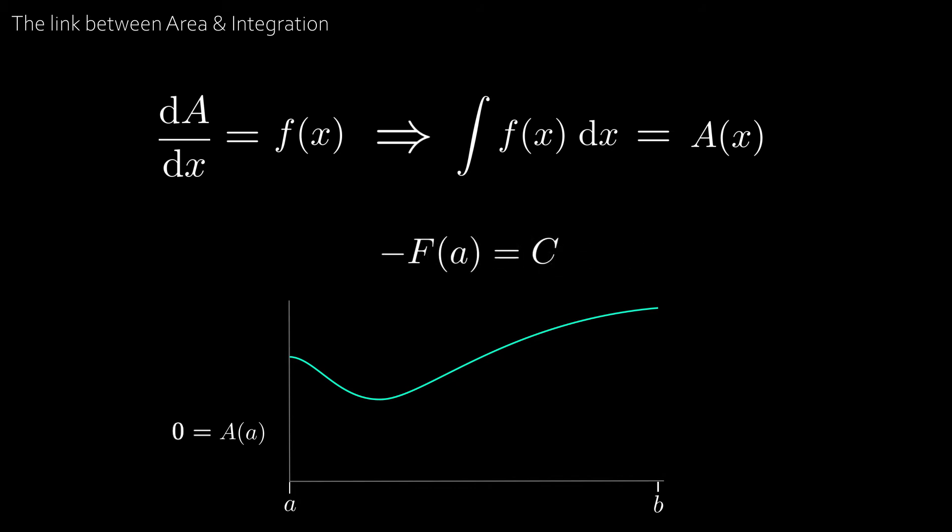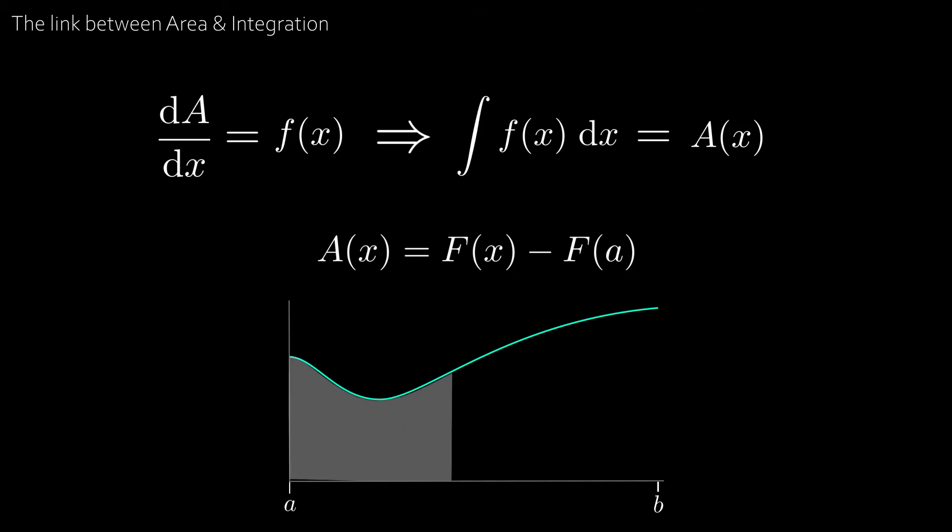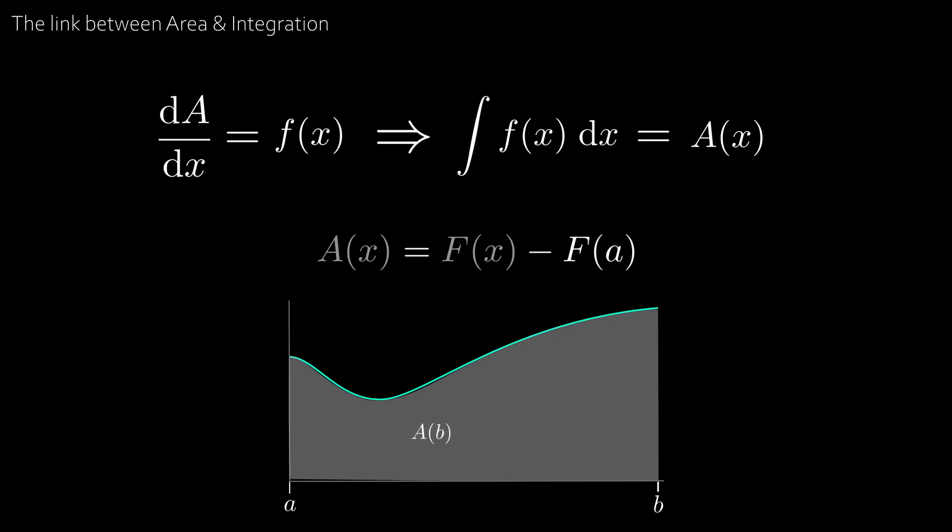So we have that A of x is equal to capital F of x minus capital F of a. And if we want to find the area up to the point b then we have that A of b is equal to capital F of b minus capital F of a. And we write the area under the curve between b and a as the integral between b and a of f of x dx.